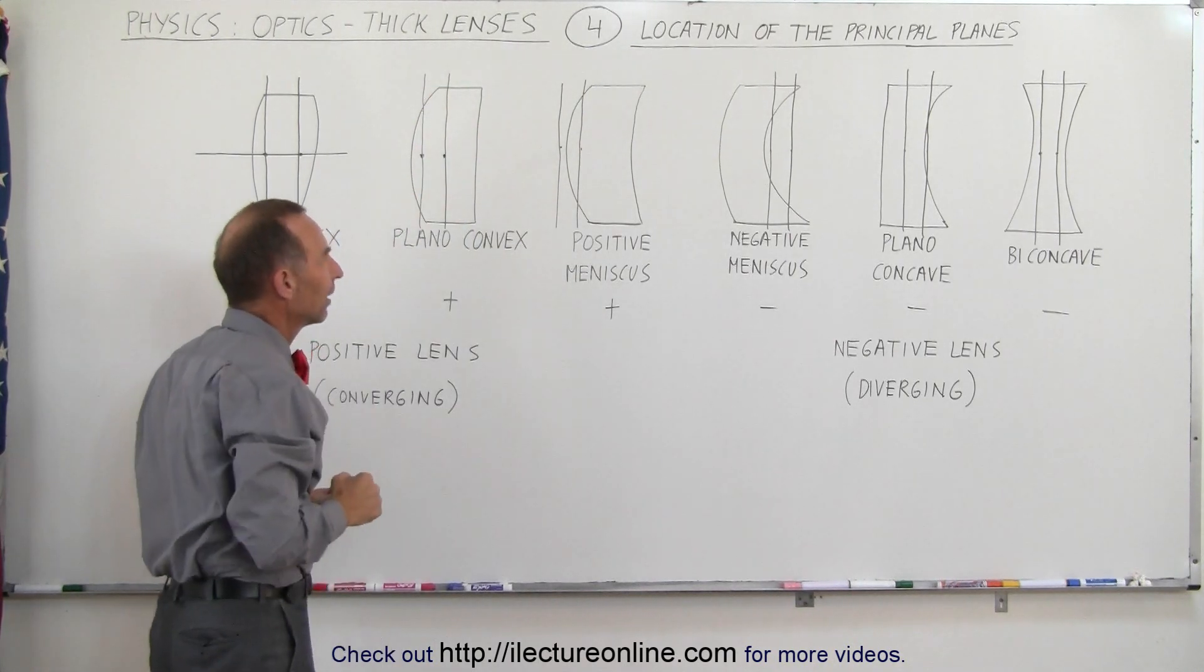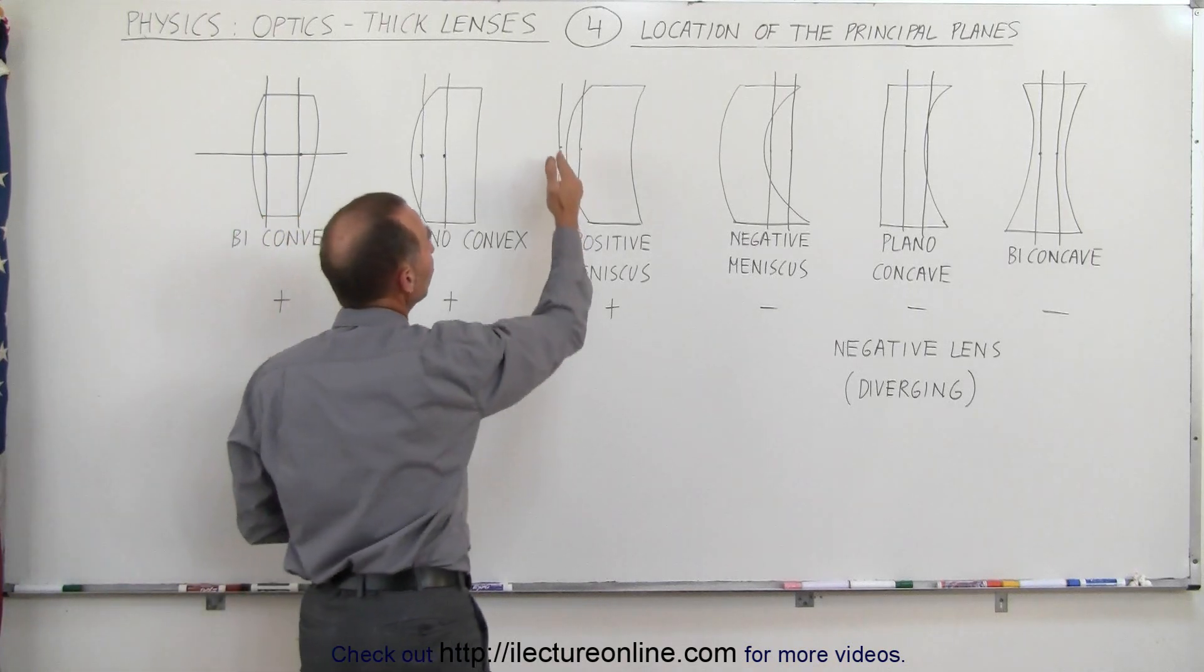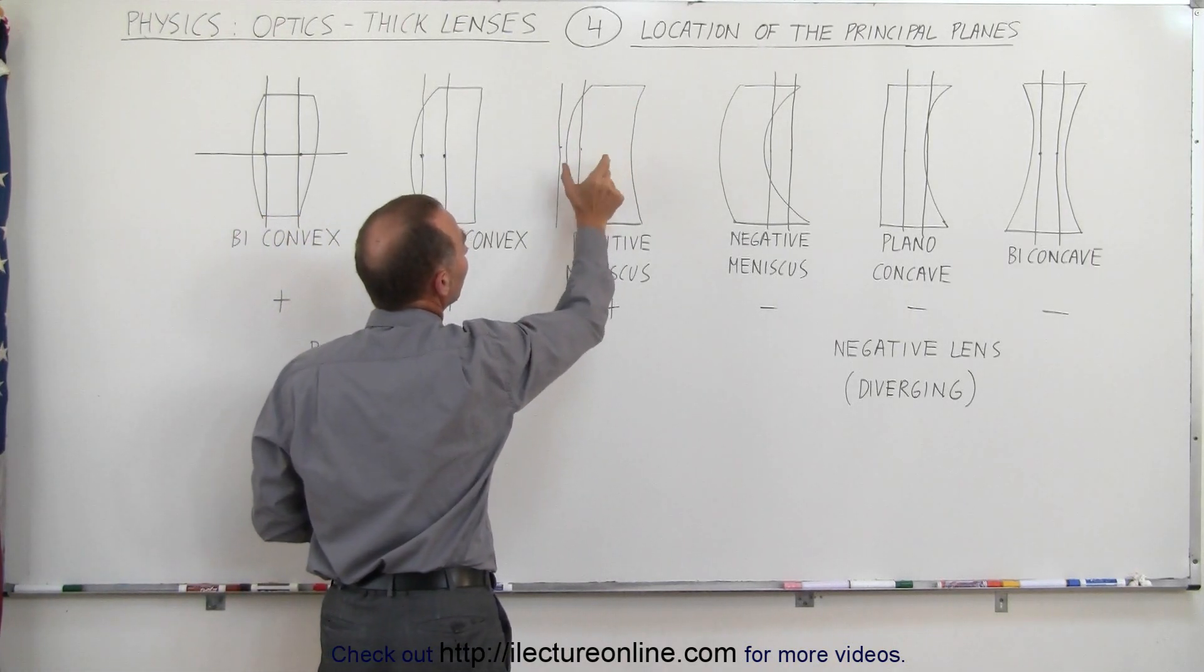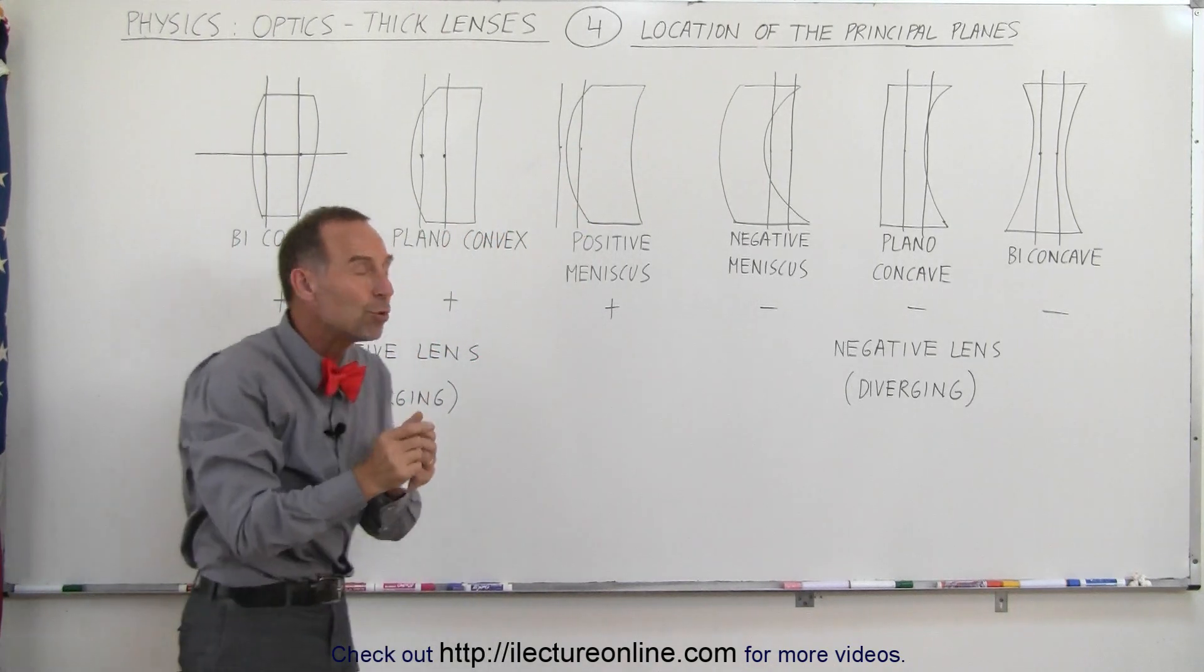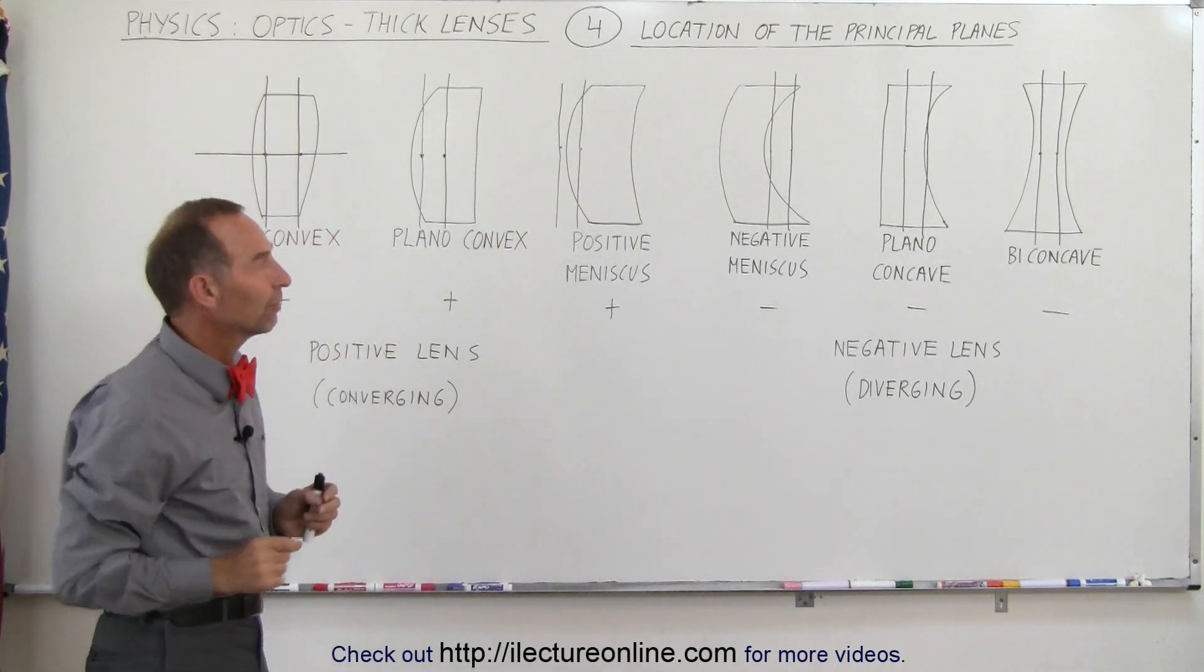In this case where both the front and back side of the lens have curvature, you can see that the principal planes can actually move outside the location of the lens.